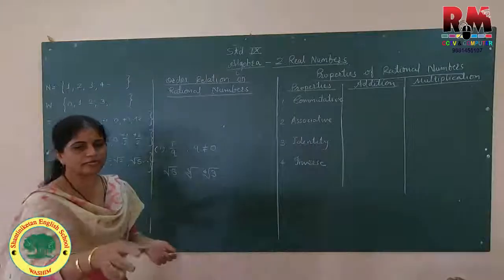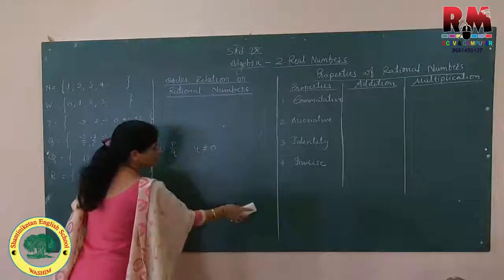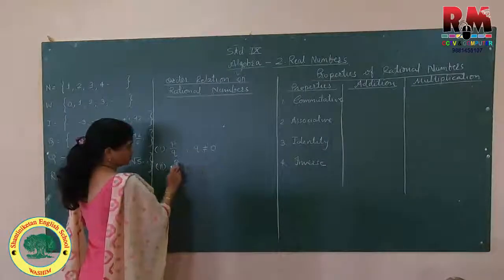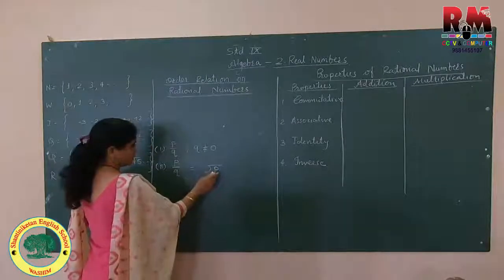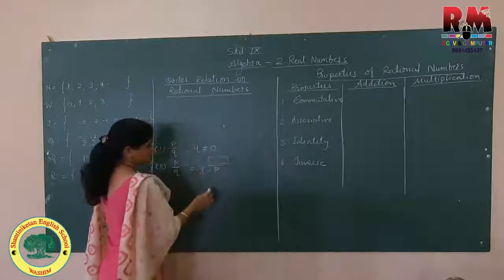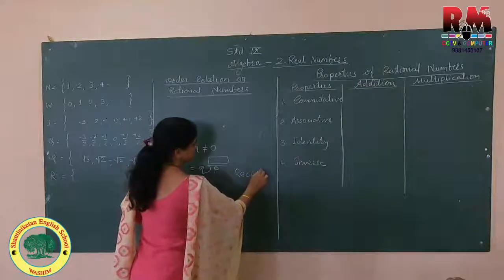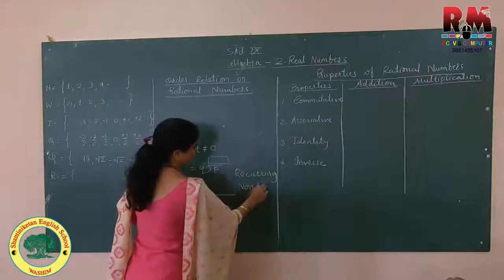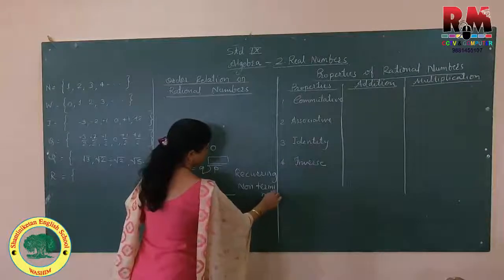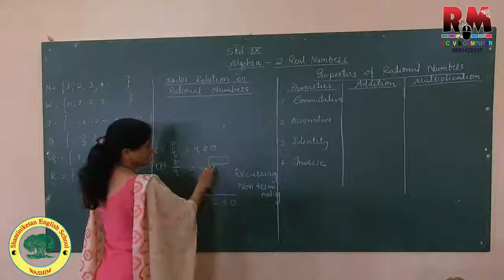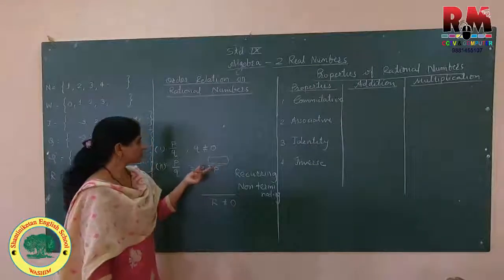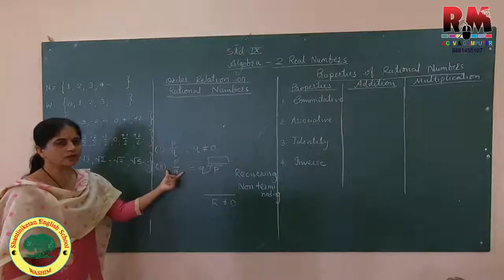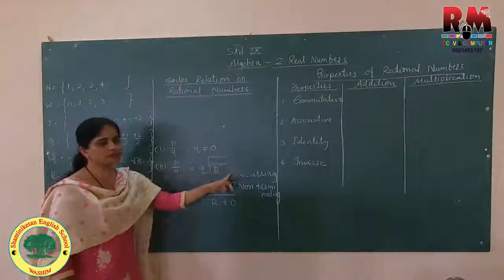The second definition of rational numbers is very important. Numbers in the form of P upon Q — after finding their division at P divided by Q — the quotient obtained should be recurring and the division should be terminating or non-terminating. Non-terminating means unending division, where the remainder is not equal to 0. If the quotient is recurring and division is non-terminating, those numbers are also called rational numbers. These are two important definitions for rational numbers.